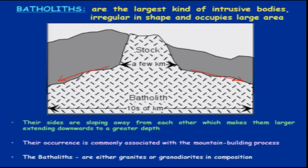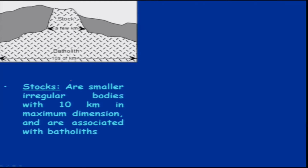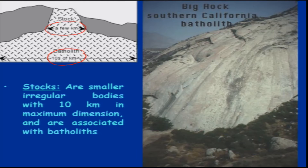Batholiths are comprised of either granite or granodiorite in composition, and the associated intrusive body is the stock. Stock, as we discussed, will be of a few kilometers — around 10 kilometers in maximum dimension — and is always associated with batholiths. So batholiths cover larger area at the bottom and on the upper part we see the stocks. One of the best examples of stock or batholiths is in California, USA.